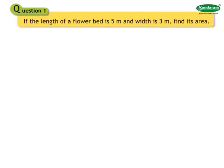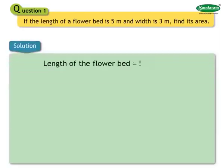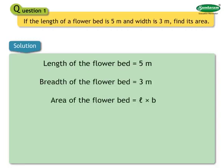Let us solve Exercise 8.7. Number 1: If the length of a flower bed is 5 meters and width is 3 meters, find its area. Solution: Length is 5 meters, breadth is 3 meters. Area of the flower bed equals length into breadth equals 5 into 3 equals 15 square meters.